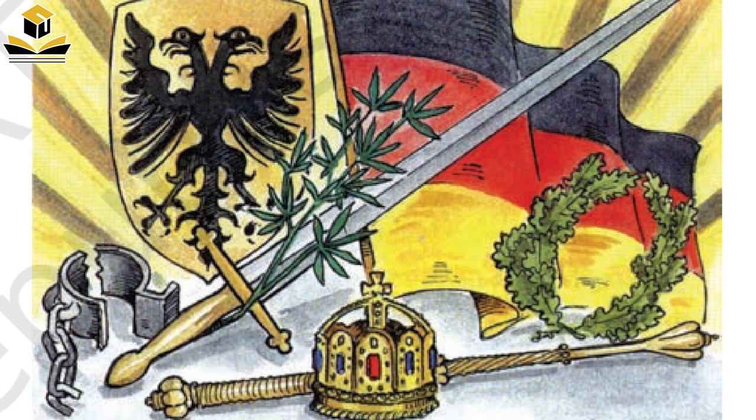Germania's other symbols include a broken chain, representing being freed; a breastplate with the eagle, symbolizing the strength of the German empire; a sword representing readiness to fight; and an olive branch around the sword, representing the willingness to make peace.